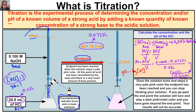0.241 molar HCl dissociates completely, giving us 0.241 mol/L of H⁺. Taking the negative log of 0.241 gives us a pH of 0.618. So the pH of our hydrochloric acid solution is 0.618 and the concentration is 0.241 mol/L. This formula works well when the mole ratio between acid and base is 1:1 — but what if that's not the case?